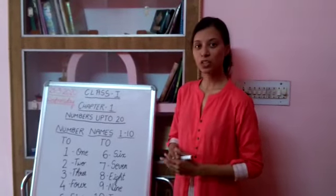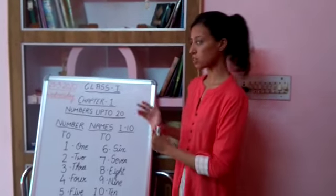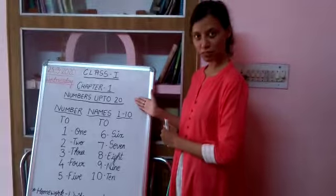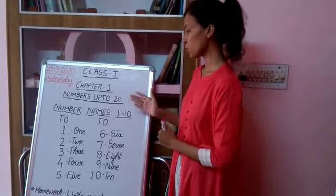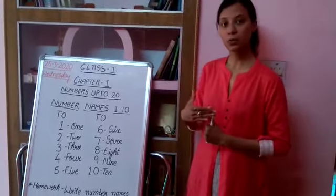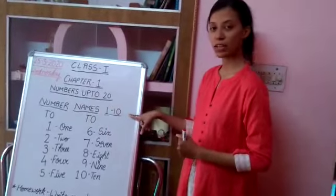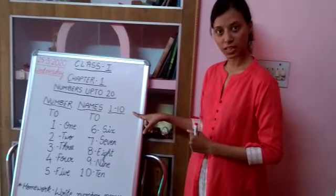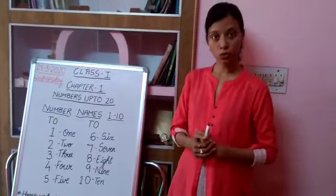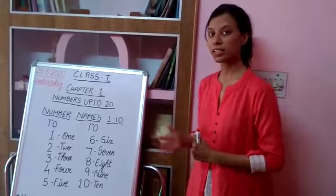Hello students, today I am going to explain you about chapter 1, numbers up to 20. So we are going to start with one section, that is number names 1 to 10. You are going to say it with me, louder, with all the spellings.